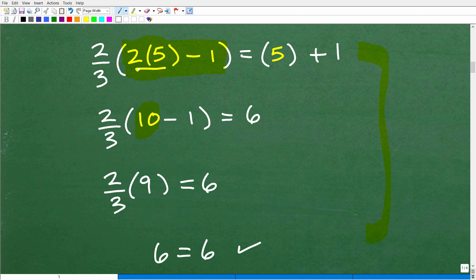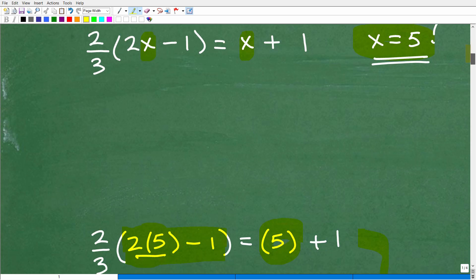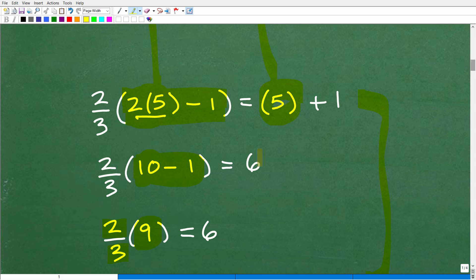All right, so we have 2 times 5 is 10. So we have 10 minus 1. Let's work over here on the left-hand side for a second. It's going to be 9. So I have 2 thirds times 9. All right, so here I had to plug in a 5. I have to plug in a 5 there and I have to plug in a 5 there. So this is going to be 5 plus 1, which of course is going to be 6 on the right-hand side.